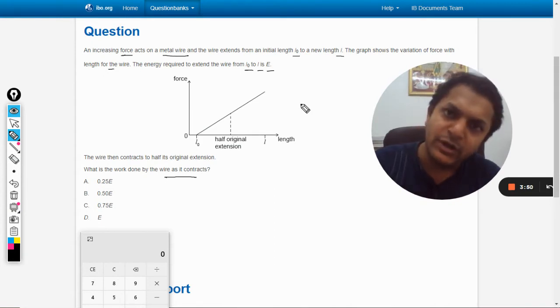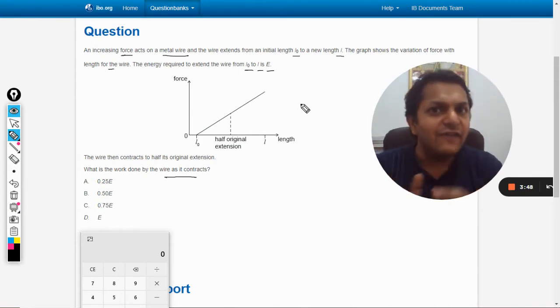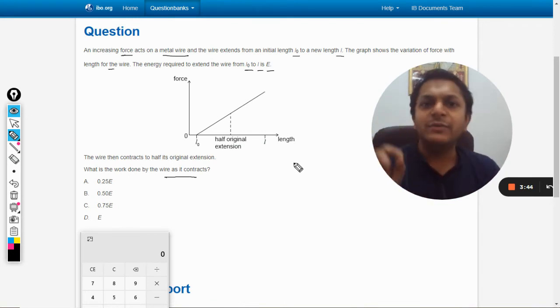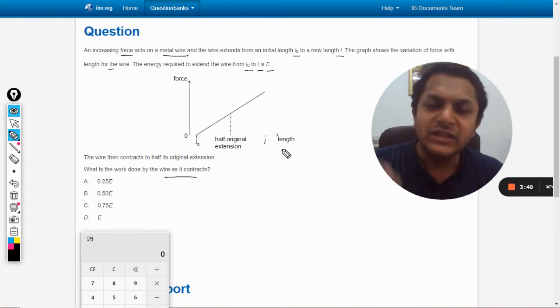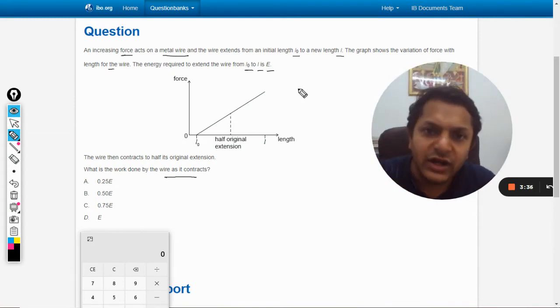Now I am going to invoke the work-energy theorem that we have completed earlier. The work-energy theorem is: the work done by the field force or the restoring force—in this case it will be restoring force—will be equal to the positive change in kinetic energy and the negative change in the potential energy.